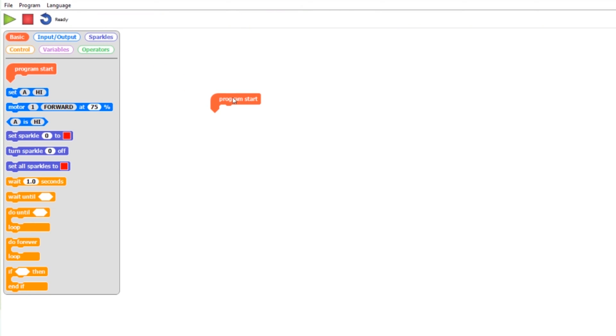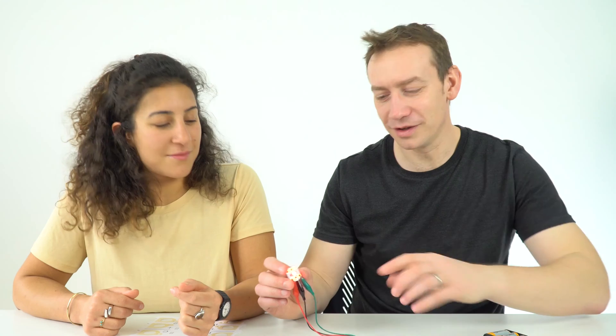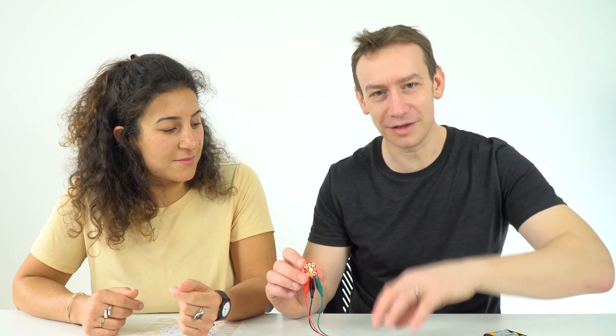Very simply, if we're going to set sparkle zero to red—sparkle zero is your first sparkle—and if you just press play, then the sparkle should come on. We can now see that the sparkle is working, that this is talking to the computer, and then you can go ahead and start some more advanced programming.